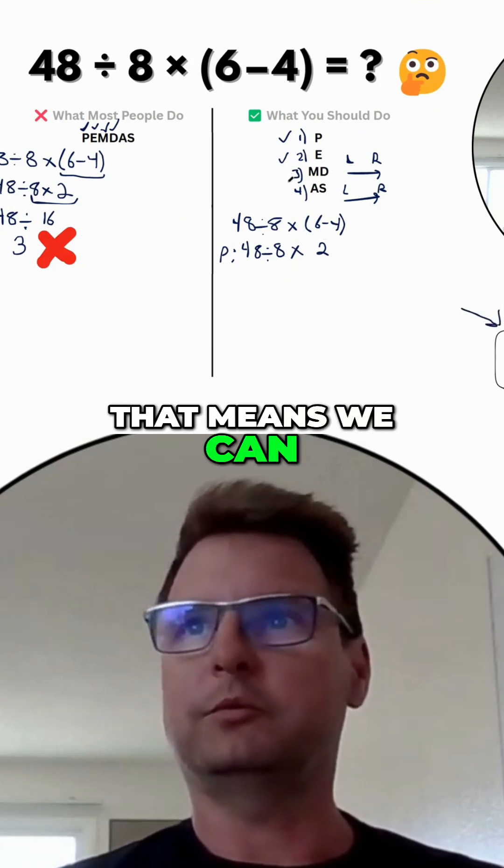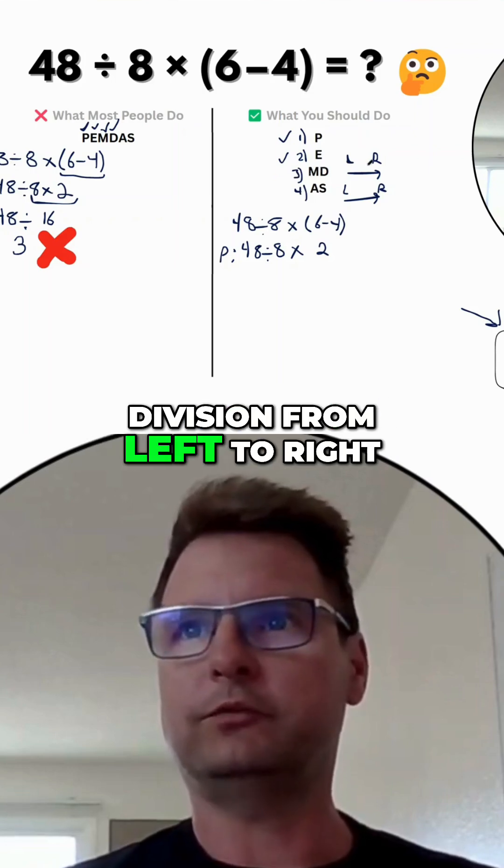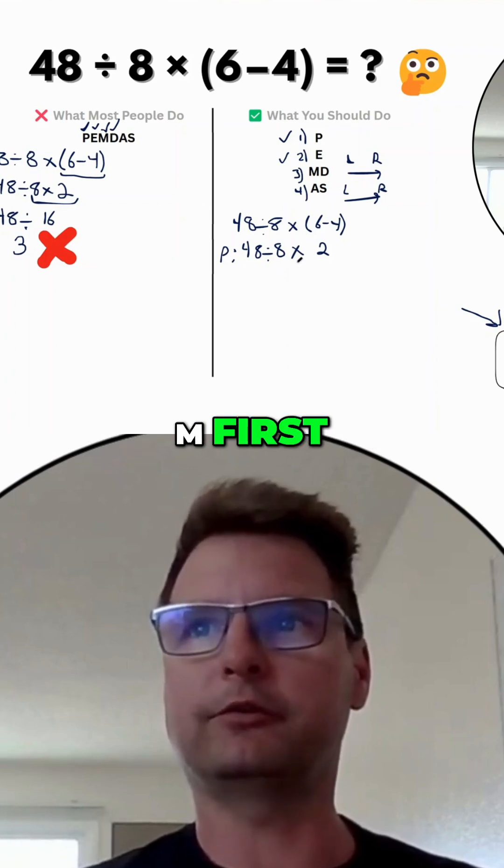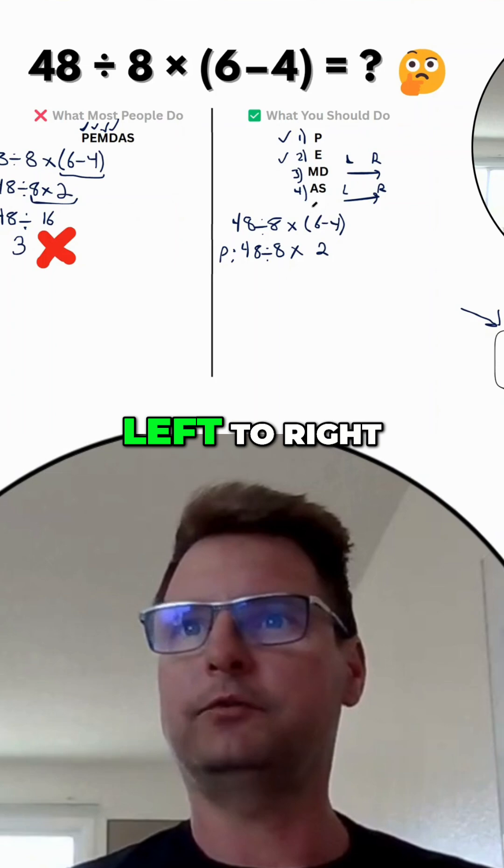And then that means we can move on to step three, which is multiplication and division from left to right. So we have a division and a multiplication here. Before we did M first, but we don't actually want to do that. We want to do either or left to right.